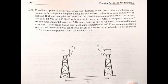A pigeon in the line of sight causes an additional 2 dB loss. The receiver has an equivalent noise temperature of 400K and an implementation loss of 1 dB. How far away can the two towers be if the bit error probability is not to exceed 10 to the minus eighth?